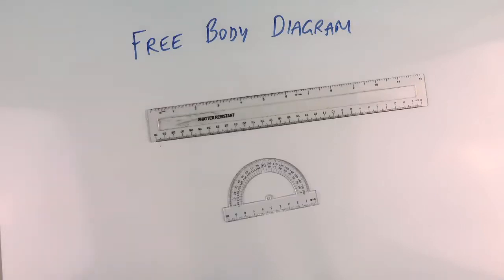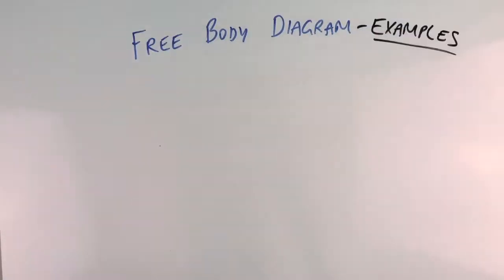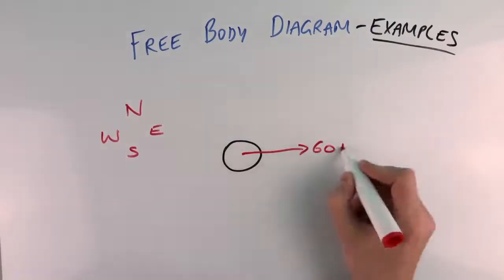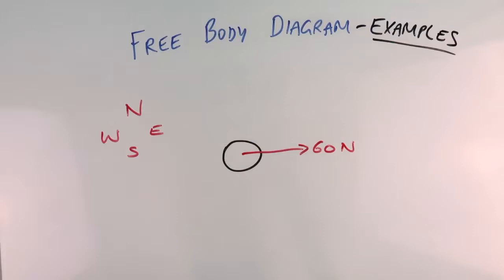Here are some free body diagram examples. There's a football and two people kick it at exactly the same time. One person kicks it due east with a force of 60 newtons and one person kicks it due north with a force of 80 newtons. To work out the net force and which direction the ball will travel, we must use a scale. Because of the size of these particular forces, I'll choose a scale of 1 centimeter equals 10 newtons.